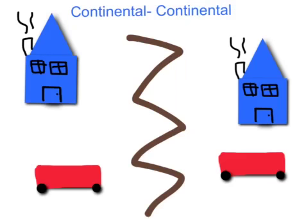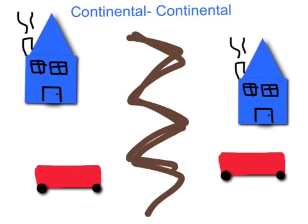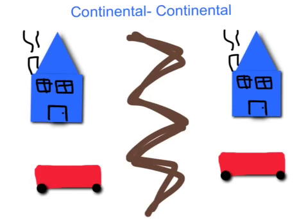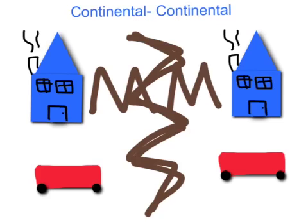Continental continental is when rocks move towards each other and this causes earthquakes. This also causes really high mountains to form out of the earth.